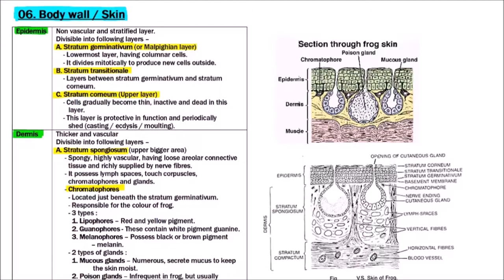Welcome to Studio Biology. In this video we are going to discuss the body wall or skin of earthworm. Skin of earthworm is divisible into two parts: epidermis and dermis.